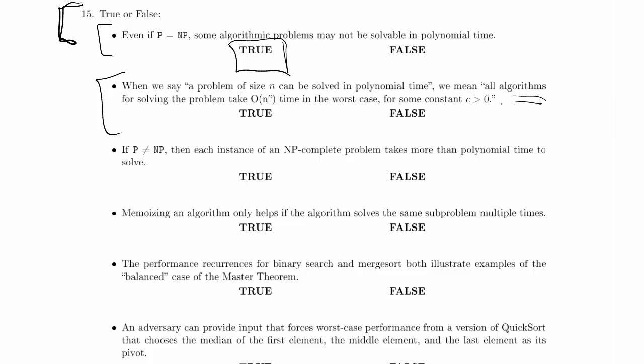But we do not mean every algorithm for solving the problem takes that much time. It is really easy to pick algorithms for problems that we know take polynomial time that take much more than polynomial time. We've seen this from the start of the term, like stable marriage. Can you solve this in more than polynomial time? Sure, try out every matching. That was the first thing we said we could do, and that took n factorial or more time. That's clearly much more than polynomial.